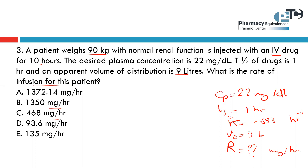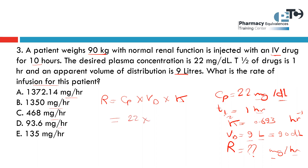The formula connecting this information is R = Cp × Vd × K. But we cannot use all the information directly — we must check the units. The concentration is in mg per deciliter, and Vd is in liters, so we must convert Vd to deciliters: 9 liters = 90 deciliters. The unit of time is hours — no problem there. So multiply 22 × 90 × 0.693 to get the answer: 1372.14 milligrams per hour.